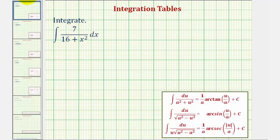Let's also factor out the seven. So this is equal to seven times the integral of one divided by, again, 16 is equal to four squared plus x squared dx.